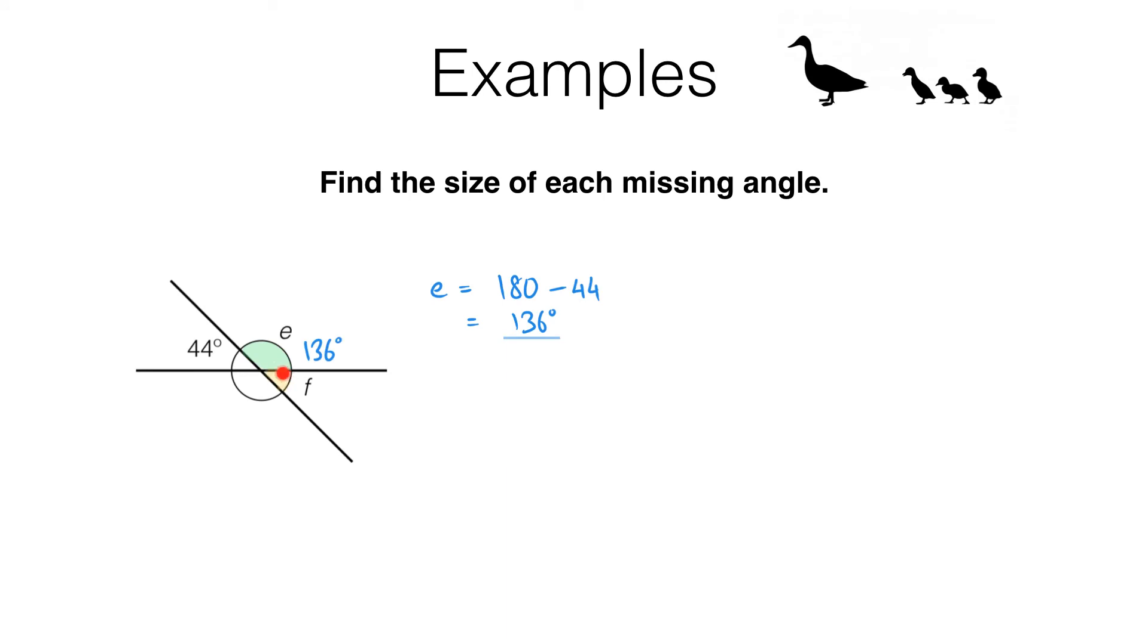Now to find F we can use the same skill again. Notice that the angles E and F are at a point on a straight line. Pause the video and see if you can work out what F is. Hopefully you've spotted that these two must add up to 180 degrees. So F is going to be 180 minus 136 and that gives us 44 degrees.